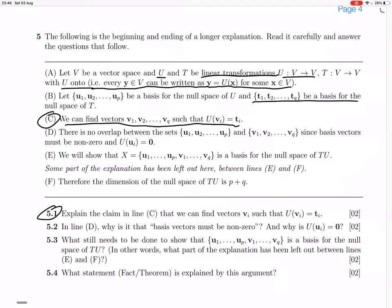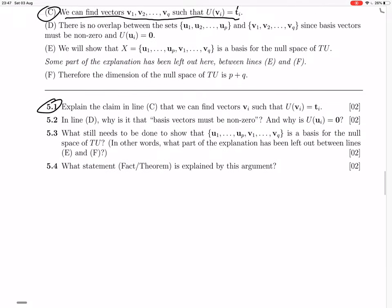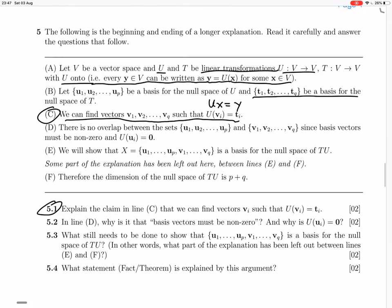I.e., every y in V can be written as y equals ux for some x in V. Okay, and that's the essential bit. So for every ti, we can write ti equals U(vi). So the answer is then, yes, u is onto.